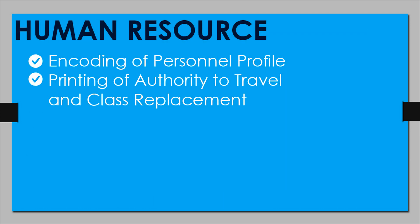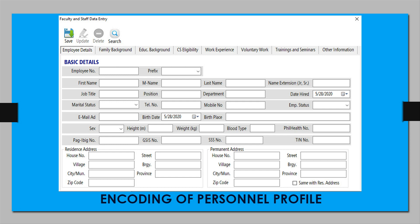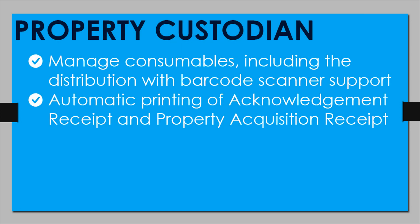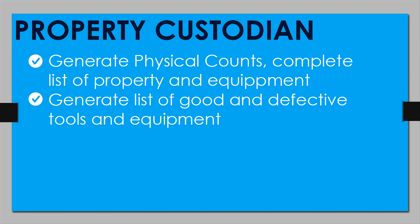The human resource module can do the encoding of personal profile, printing of authority to travel, and class replacement. The property custodian can manage consumables including distribution with barcode scanner support, automatic printing of acknowledgement receipt, and property acquisition receipt. Generate physical accounts and complete list of property and equipment.